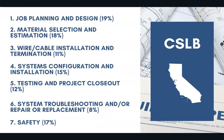19% of the exam covers job planning and design. 18% covers material selection and estimation. 11% covers wiring and cable installation termination. 15% covers systems configuration and installation. 12% covers testing and project closeout. 8% covers system troubleshooting and/or repair or replacement. And then 17% covers safety.